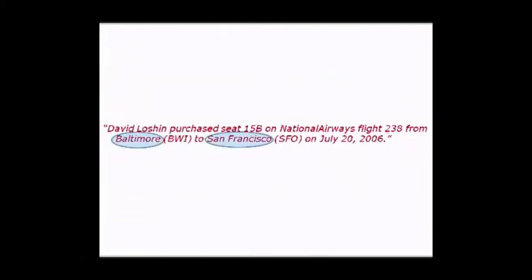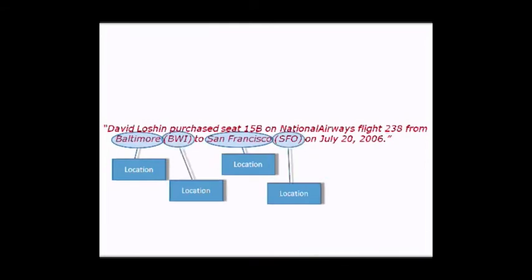It is infrequent that the concept of location is not associated with a transaction, and this example is no exception. In fact, there are four references to locations here: Baltimore, San Francisco, BWI, and SFO. One might be curious about the apparent repetition of locations in this transaction. In fact, there are some other curiosities associated with these places, and we'll revisit that in a bit.